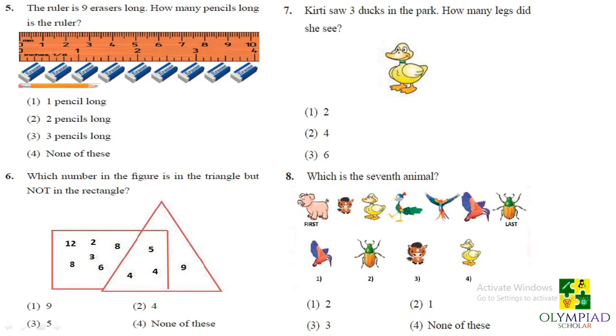So question number 5. The ruler is 9 erasers long. That means 9 erasers are placed and the ruler is placed so they are like equal length. So how many pencils long is the ruler? So in this figure it is shown that the pencil is taking the length for 3 erasers. So you can place another pencil side to it which will exactly take 3 erasers and similarly the third pencil can be drawn like this. So here we can observe that the ruler is 3 pencils long.